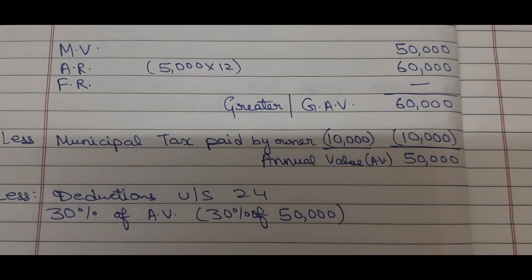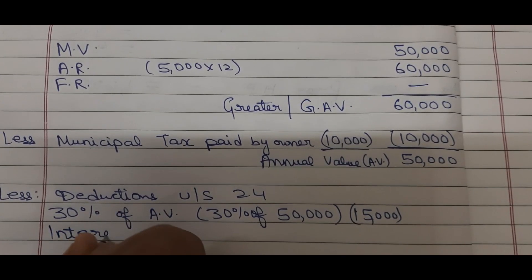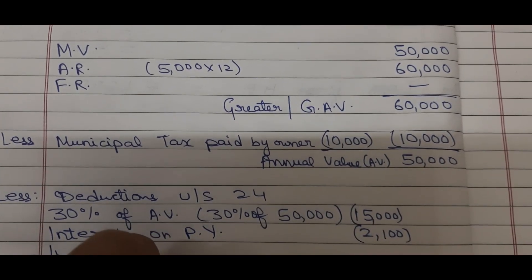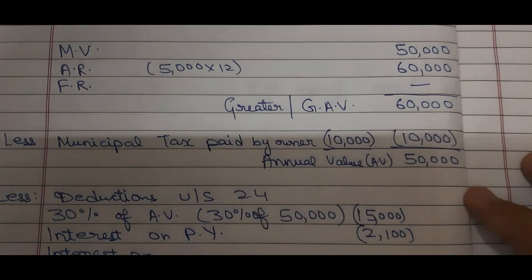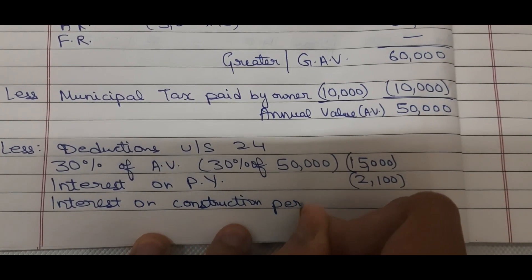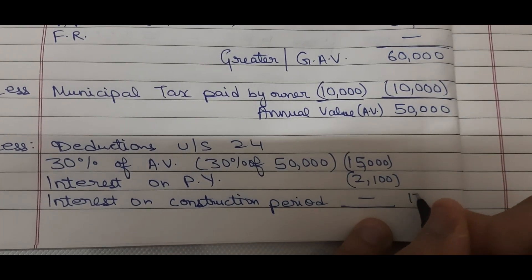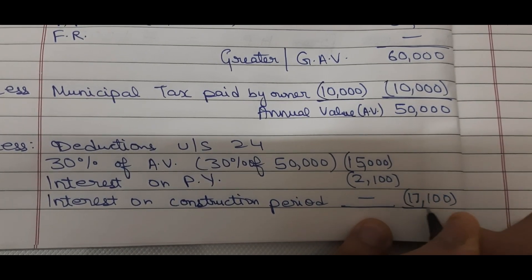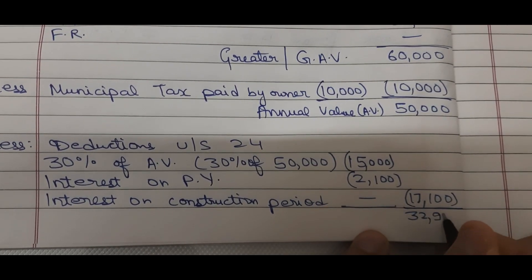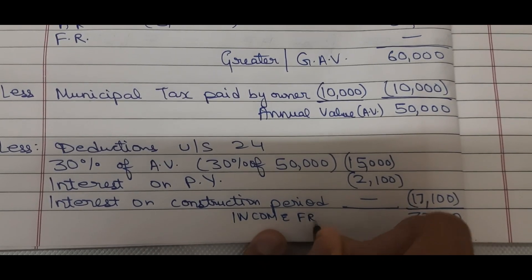After deducting municipal tax of Rs. 10,000, the net annual value is Rs. 50,000. We will do less deductions under Section 24. The first deduction is 30% of annual value: 30% of Rs. 50,000 = Rs. 15,000. Interest on loan for the previous year is Rs. 2,100. Interest on construction period is not given. Total deductions: Rs. 15,000 + Rs. 2,100 = Rs. 17,100. Income from let-out house: Rs. 50,000 − Rs. 17,100 = Rs. 32,900.